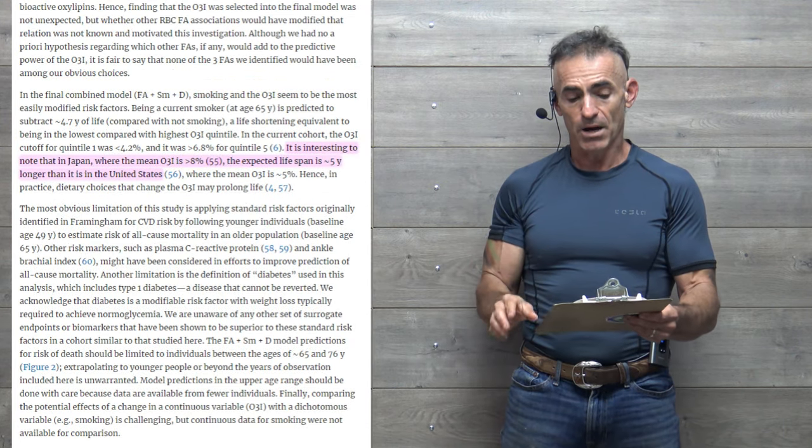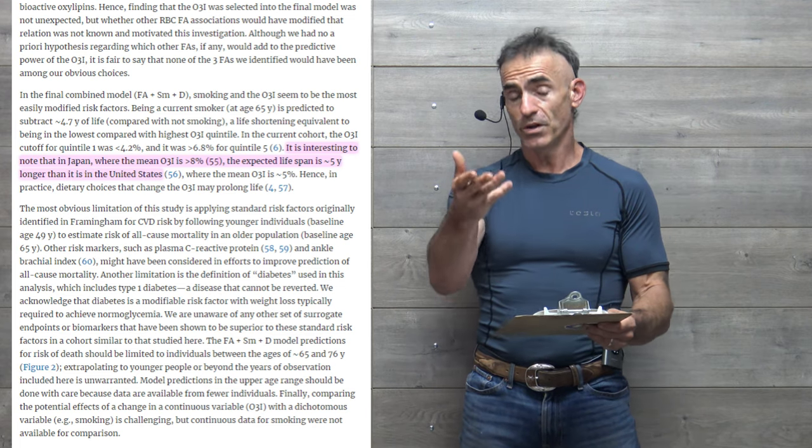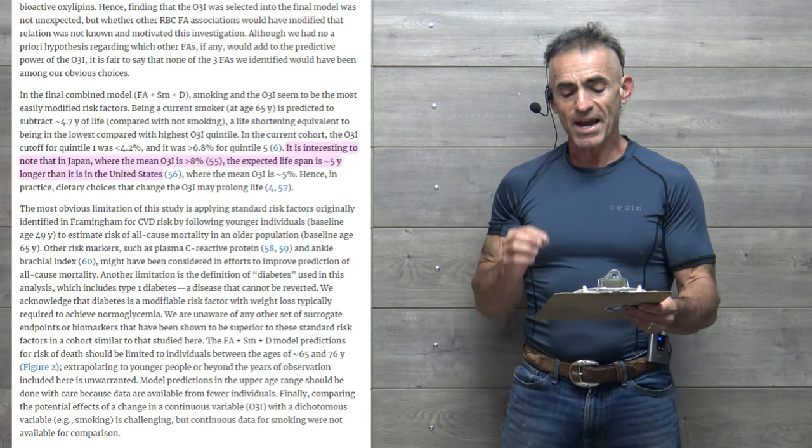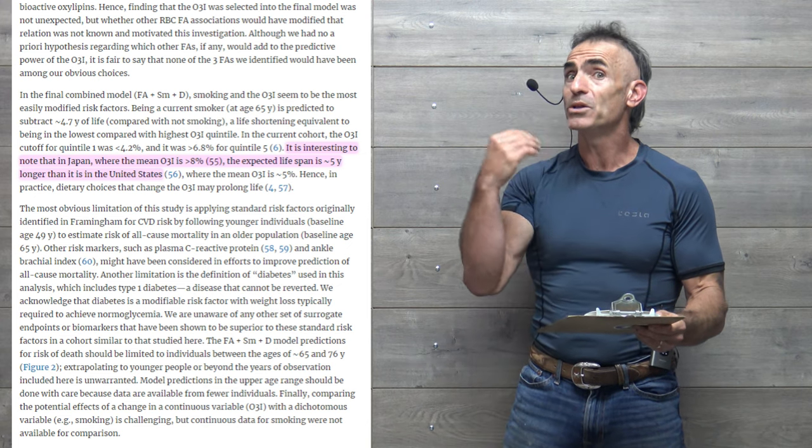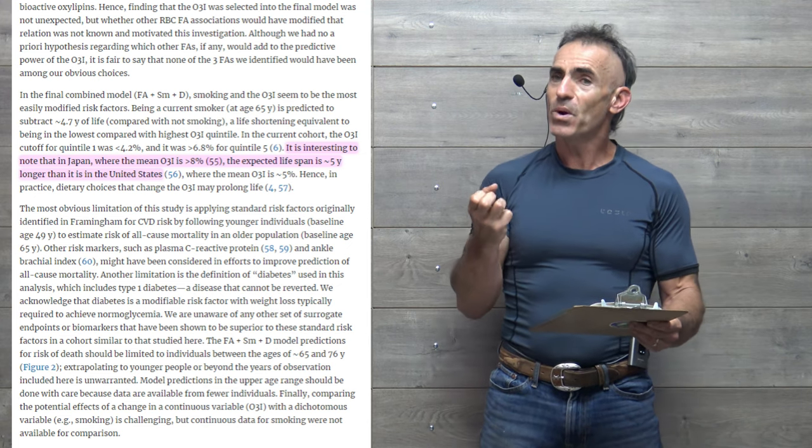In the final combined model, which is three different models including the Framingham study, smoking and having - now keep in mind, the information that we're looking at right now, we're going into the full study. This way again, so it gives you something a little bit more tangible to bite into.